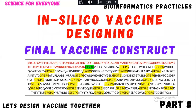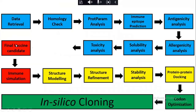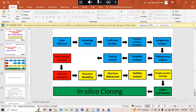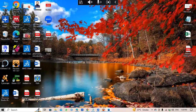In the next video, I showed you how to construct and finalize your vaccine construct and the amino acid sequence. This is part nine of that series, and in this video I will show you the immune simulation. After this, we will perform structure modeling. So let's start with the video lecture.